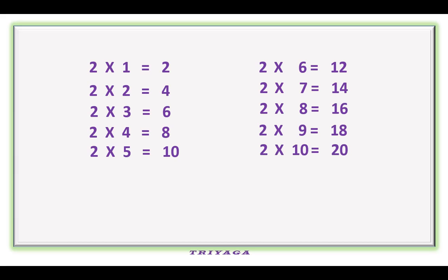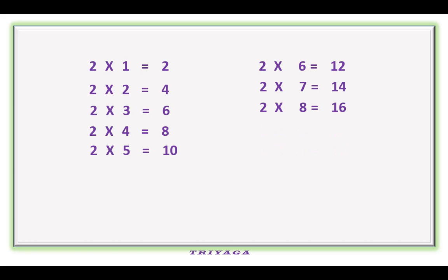Children, let's practice again. 2 1s are 2, 2 2s are 4, 2 3s are 6, 2 4s are 8, 2 5s are 10, 2 6s are 12, 2 7s are 14, 2 8s are 16, 2 9s are 18, 2 10s are 20.